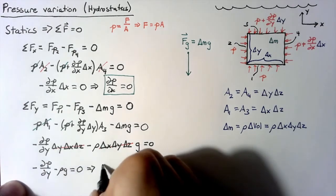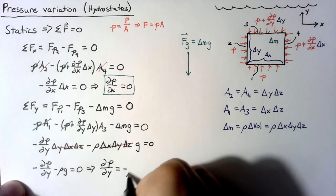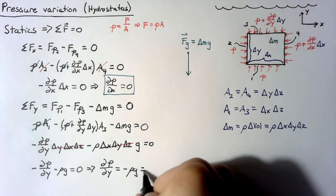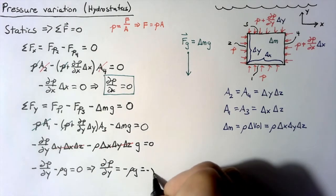Or we can say that dp dy is equal to a negative rho g. Now it turns out that this rho g turns up over and over again. It's so common that it's given its own name, which we call gamma.